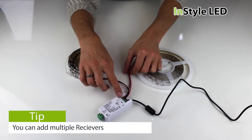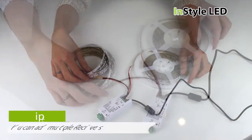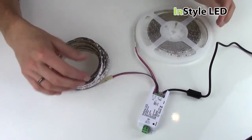You can wire multiple strips into the one dimming receiver as long as the total wattage of the LED tape does not exceed that of the transformer.